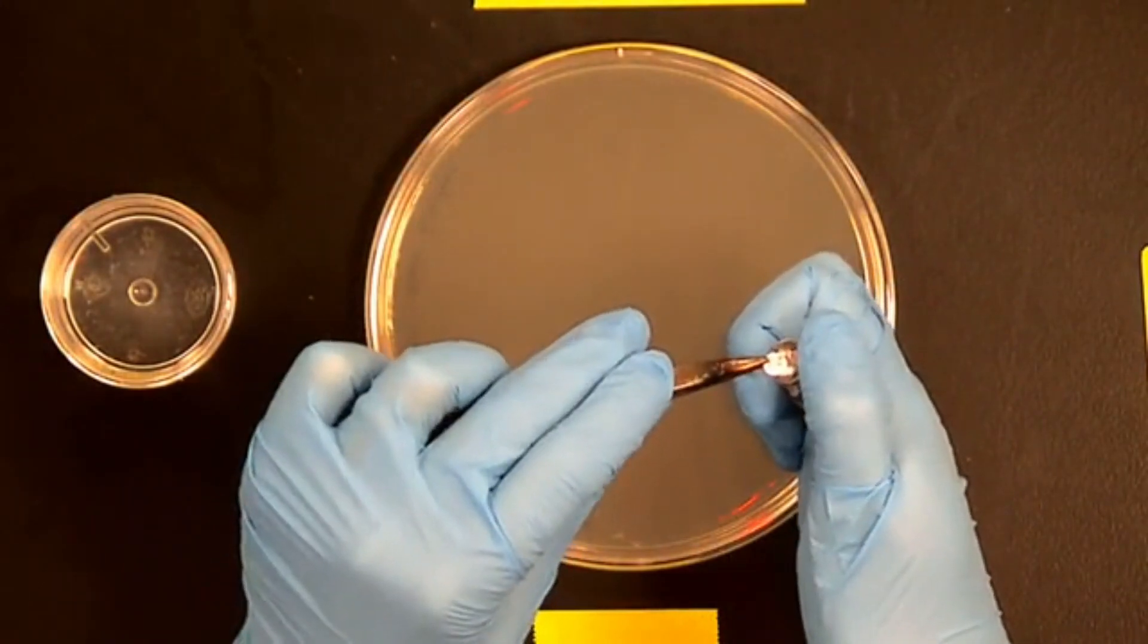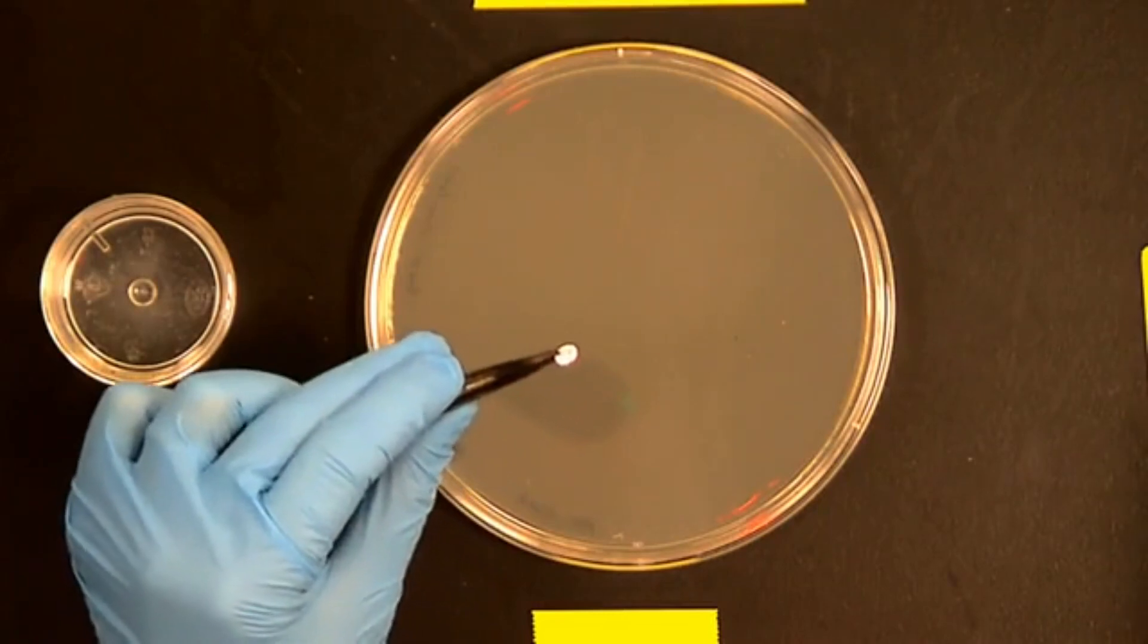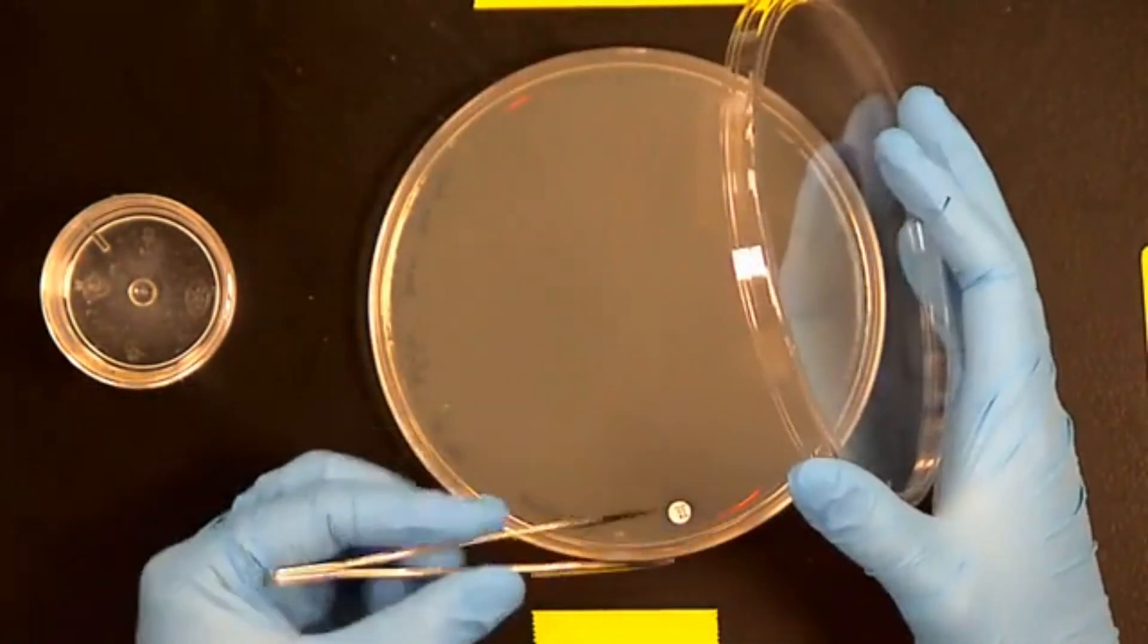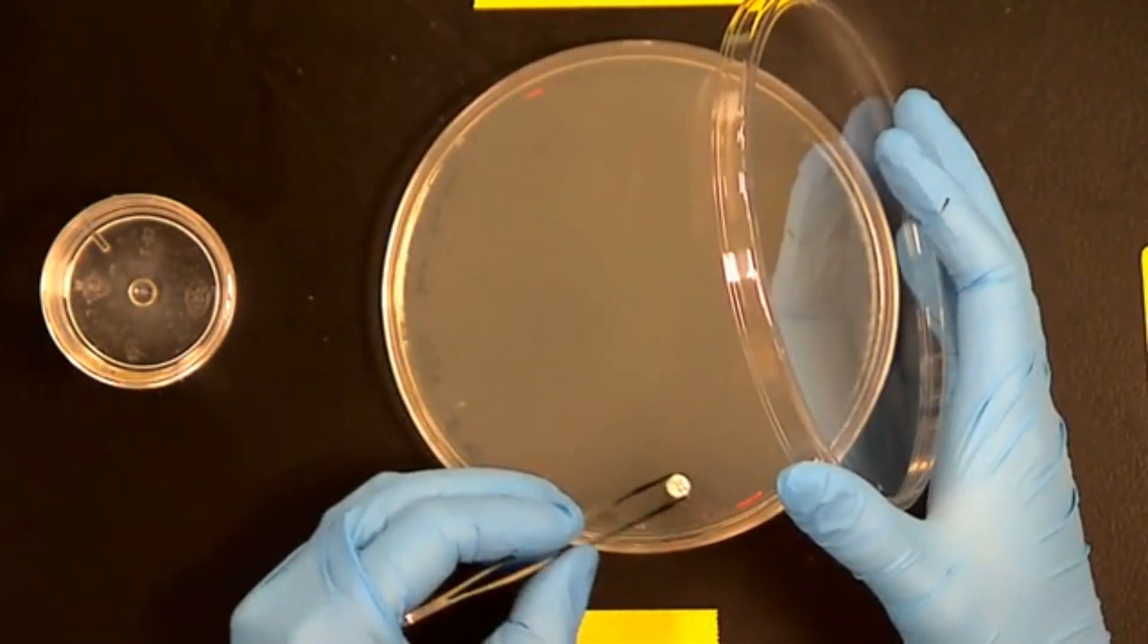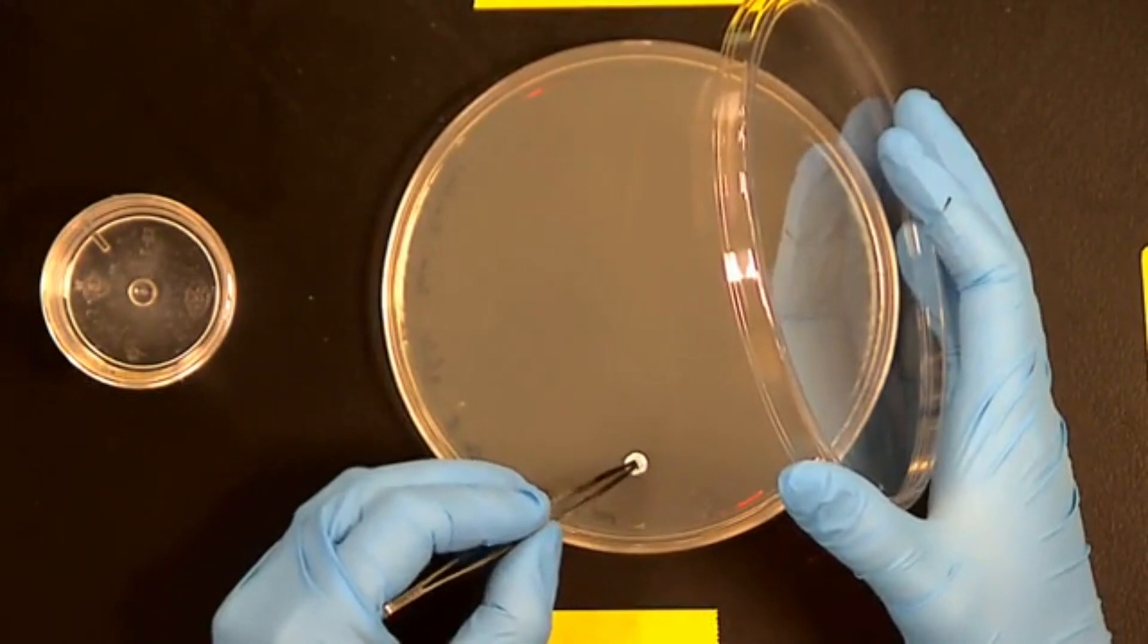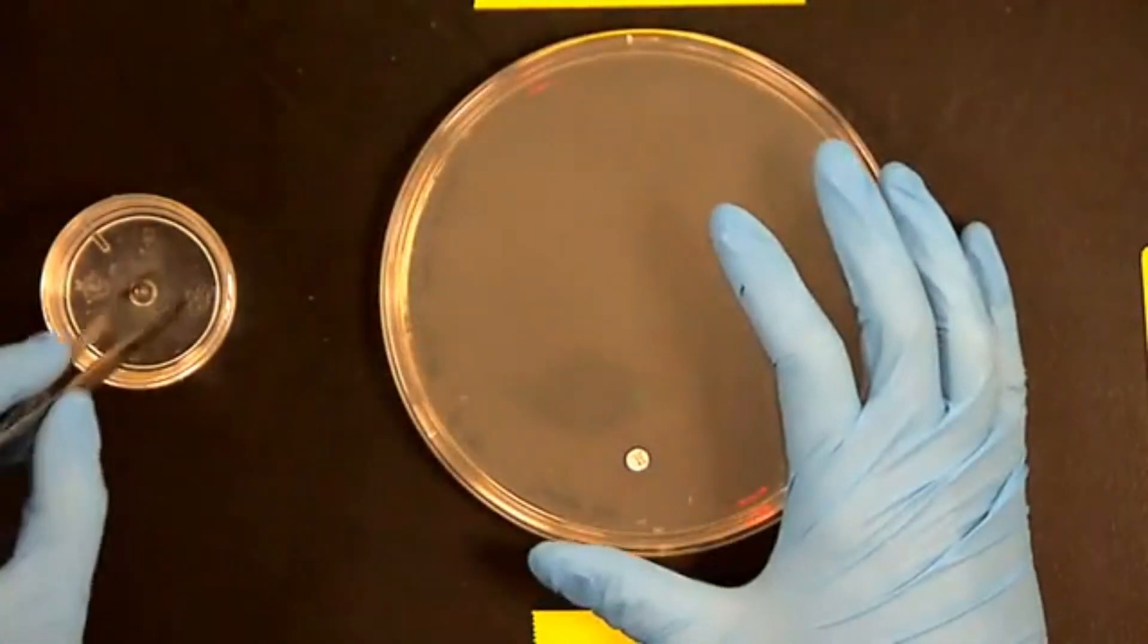There's a metal arm that allows you to push one disc at a time so that you can grab it with the forceps, and then you're going to place the disc onto the surface. And once you've done so, gently tap it to make sure it's adhered.